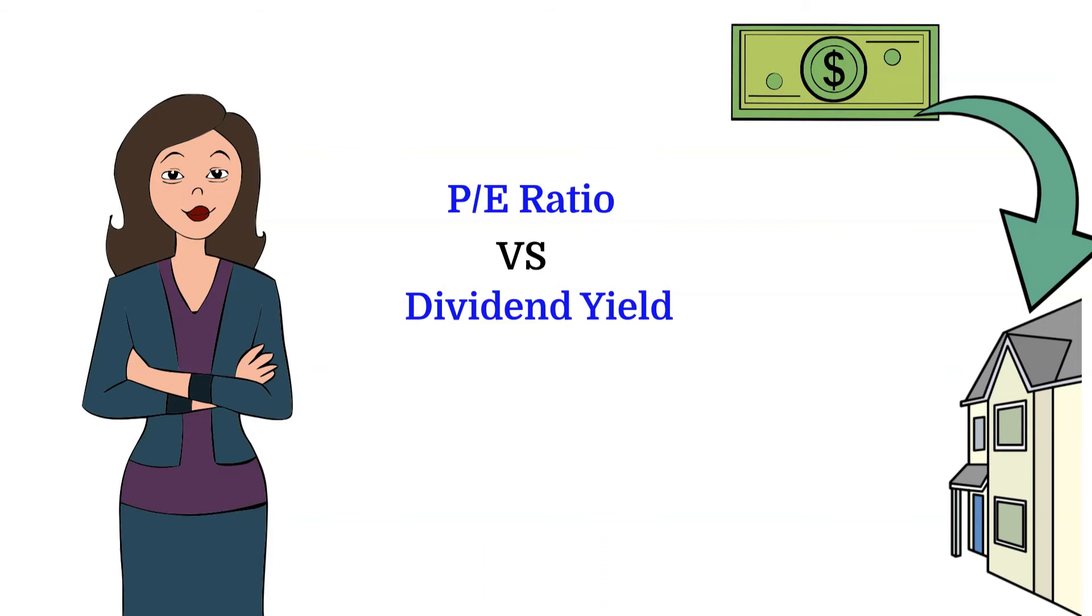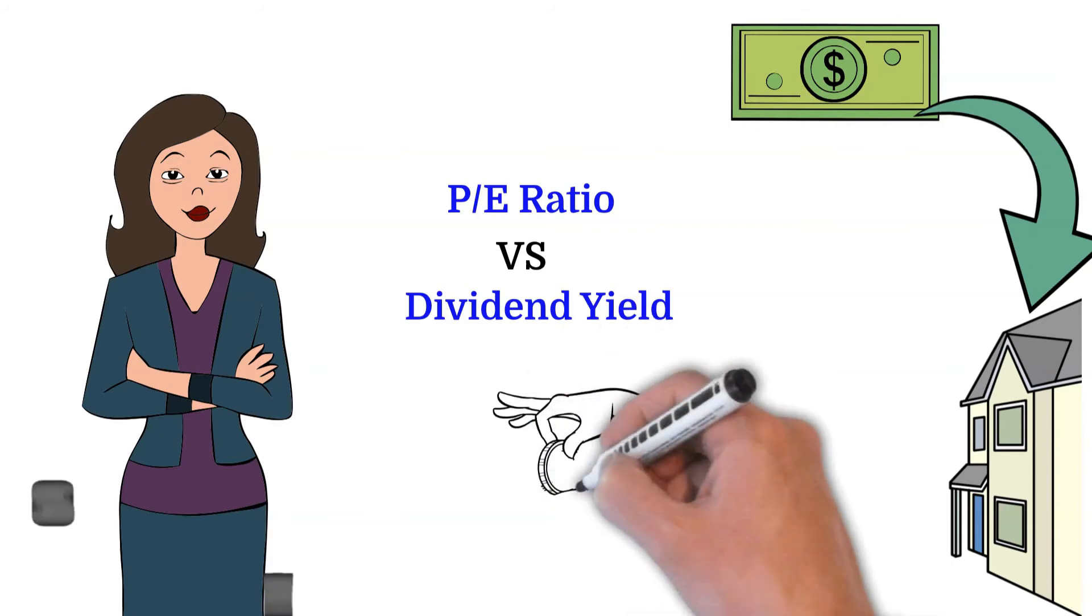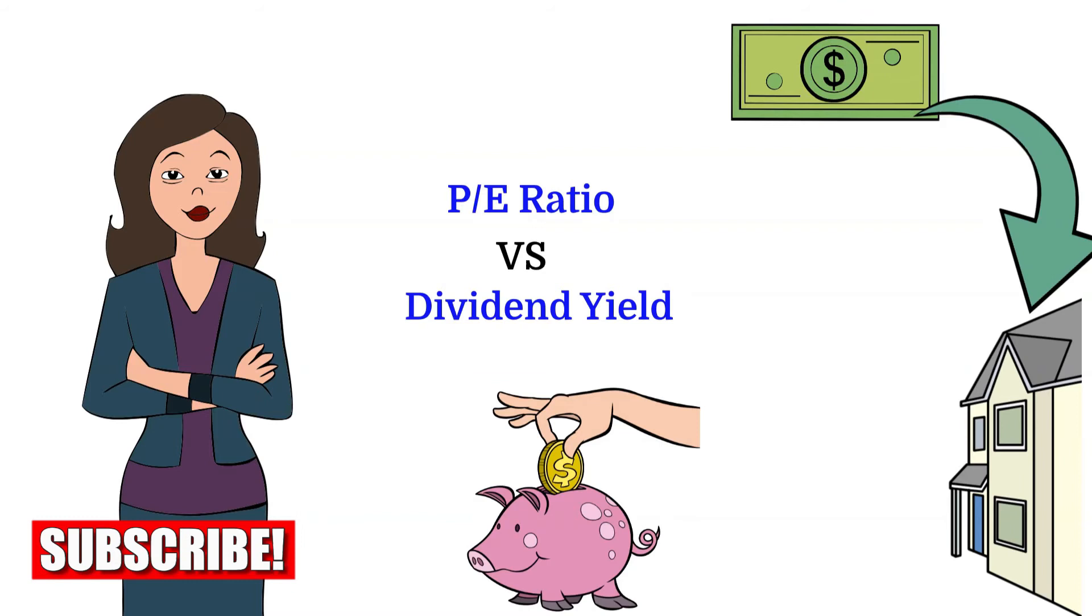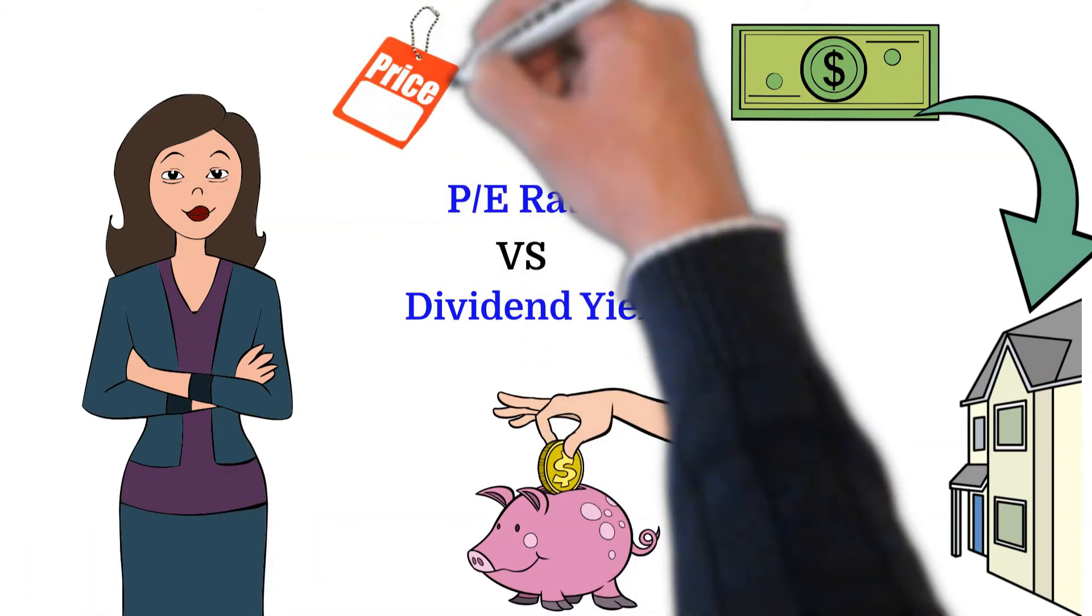The dividend yield is a percentage of a stock's current price that is paid in dividends over the previous year. The dividend yield gives investors an estimate of expected future dividend payments based on previous payments and the stock's current price.